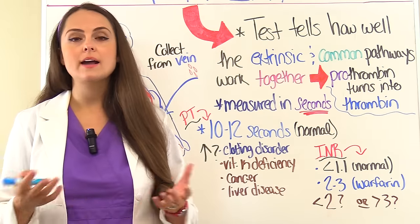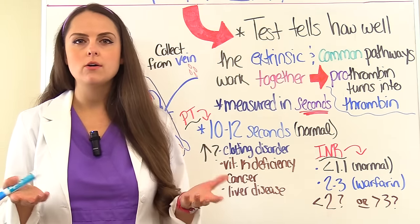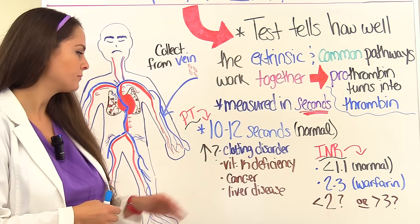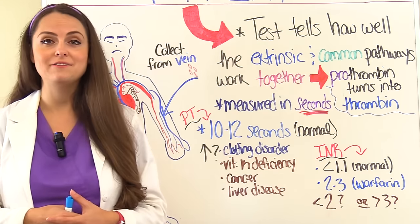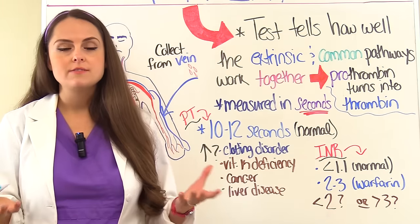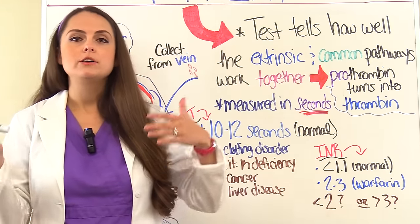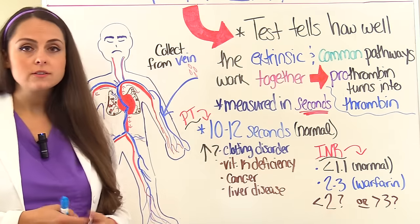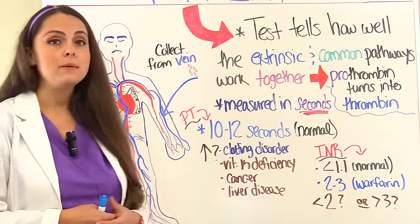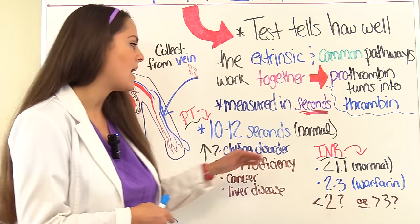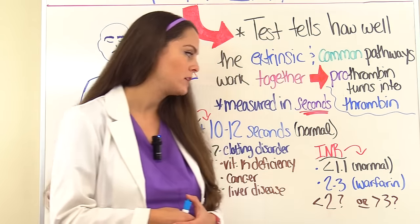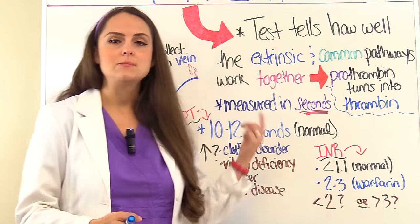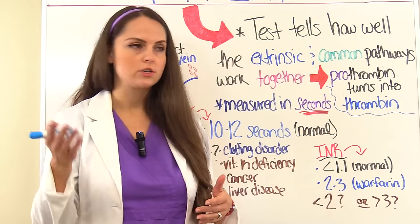If a patient's PT is higher than normal, what could be going on? Your patient may have a clotting disorder — it's taking them a long time to form a clot. They could have vitamin K deficiency, because the liver produces vitamin K and many clotting factors depend on it. They could have some type of cancer, liver disease, or they may be on an anticoagulant. This leads us to the INR, the international normalized ratio, which is calculated from the PT level and gives us a standardized way of reporting it for patients on warfarin or Coumadin.